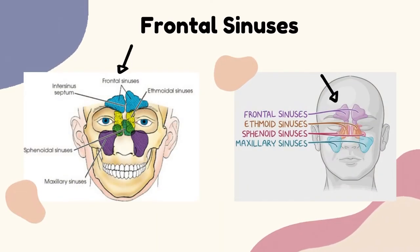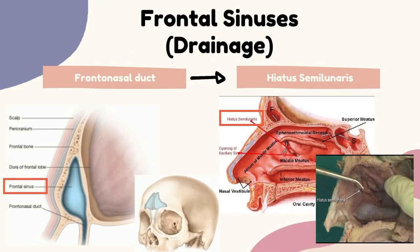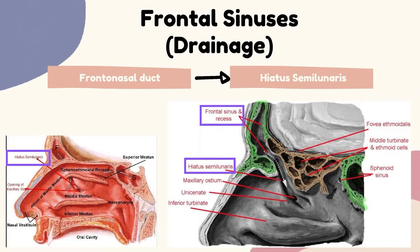Starting with the frontal sinuses: there are two frontal sinuses in triangular shape, located within the frontal bone of the skull. They are the most superior of the paranasal sinuses. Drainage is done via the frontal nasal duct, opening into the hiatus semilunaris. Referring to the diagram, by following the white arrow we can see the flow: starting from the frontal sinuses, through the frontal nasal duct, opening into the hiatus semilunaris.